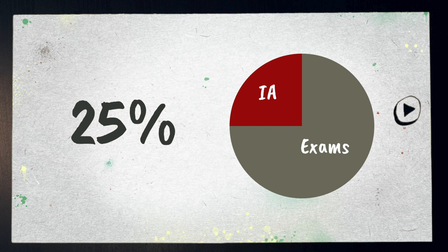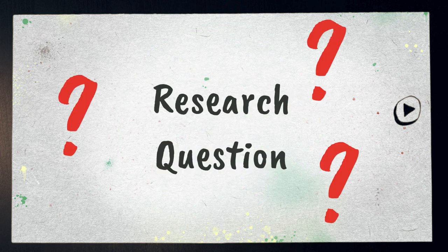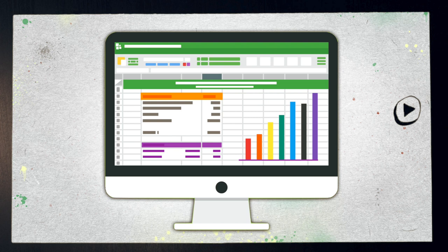The IA is an assignment that makes up 25% of your final mark on the course — that's a lot. It will basically look like a lab report when it's completed. You'll need to choose an environmental issue linked to the ESS course, create a unique research question, and collect data to answer it.